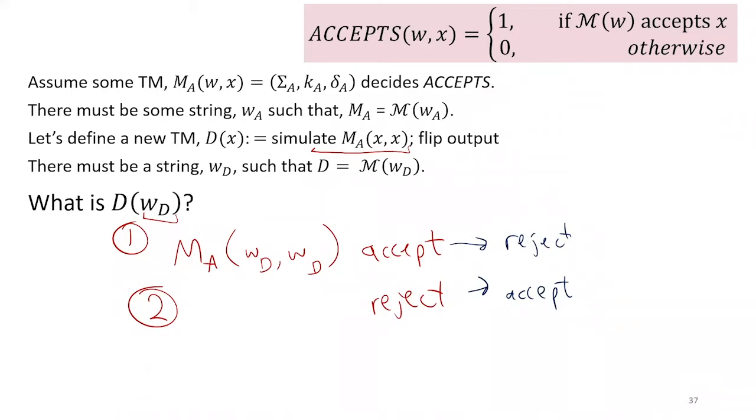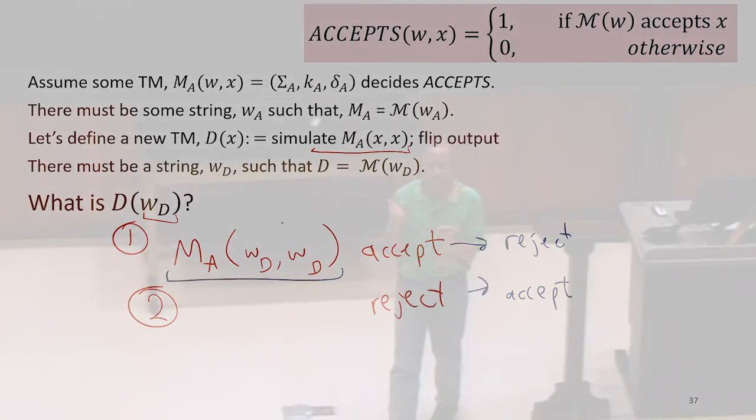Could either of these be valid? Remember, what does this mean? That means does running the machine represented by D accept the input X? So this means the machine represented by WD, which is equal to D, right?